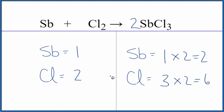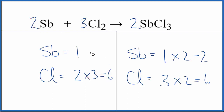So now all I need to do to balance the chlorine atoms is put a 3 here — 2 times 3 will give me 6 — and then a 2, 1 times 2 gives me 2, and we're done. This equation is balanced.